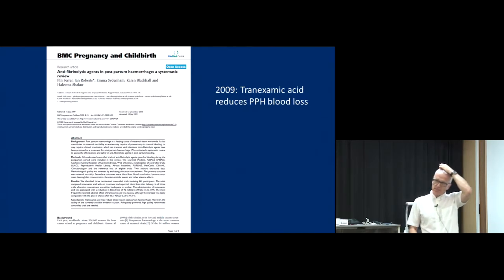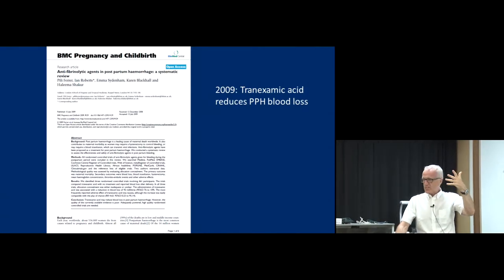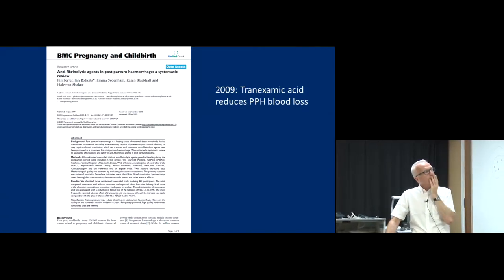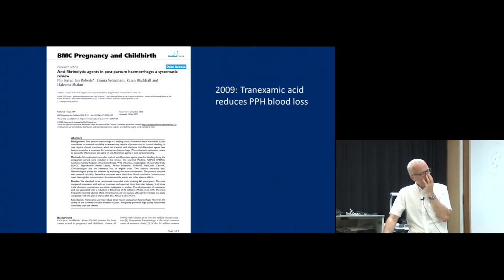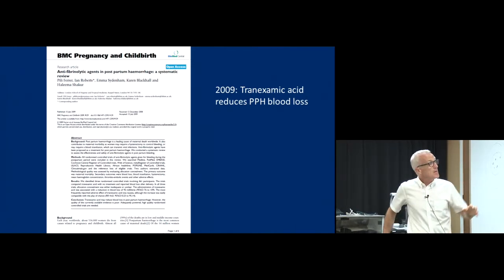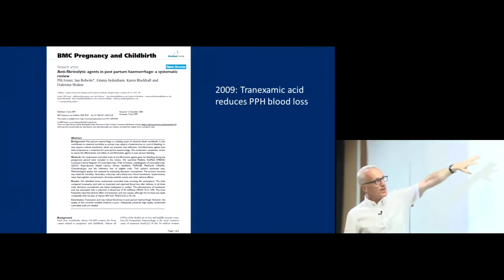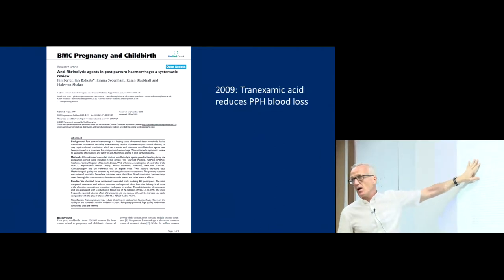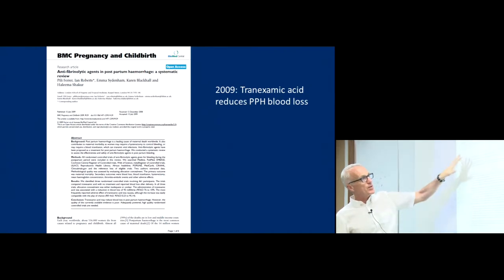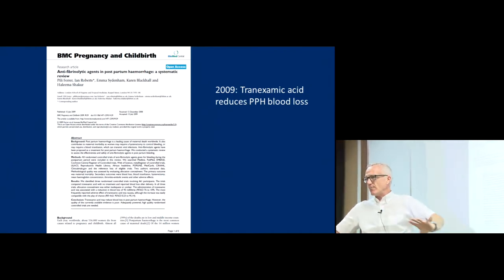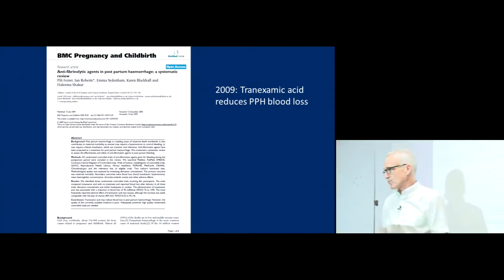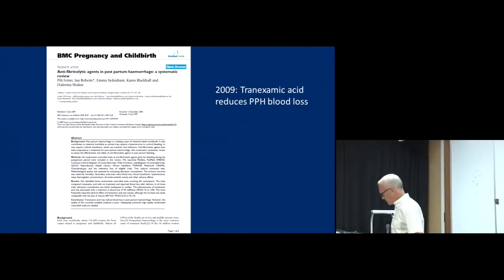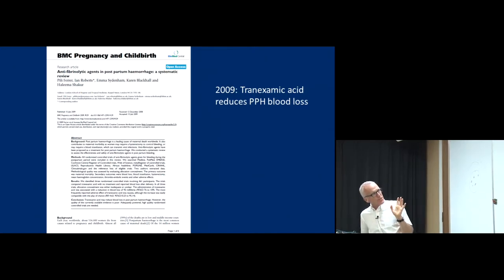I'm going to start from the beginning about the way you can use statistics to help check the data integrity. In 2009, we wrote this systematic review of tranexamic acid in postpartum hemorrhage and we found all of these trials and we concluded and we believed everything written on the paper — that tranexamic acid reduces blood loss. But since then we've become more skeptical.